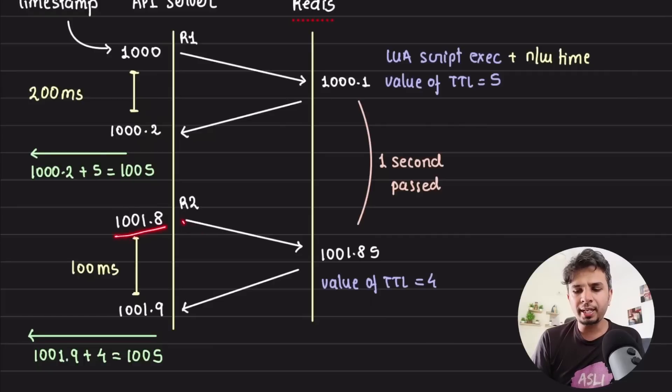Now assume half the time, so at 1001.85 is when that key is validated, that key is checked if for this rate limit key has this user breached the rate limit or not. Now because there is one second passed, at this stage, what would be the TTL of the key? Here the timestamp was 1000.1. Here it is 1001.85. Because one second is passed, the value of TTL would be four, because initially the TTL was set to five. Now after one second has passed, the TTL would be four.